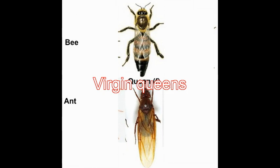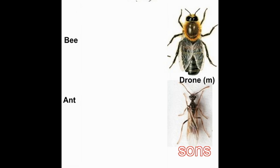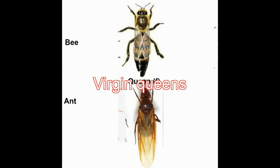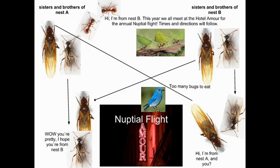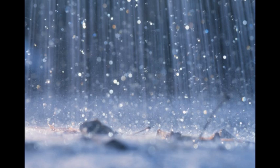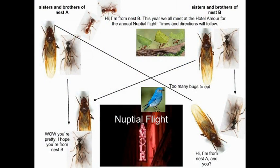Virgin queens get to make the nuptial flight to lose their virginity and become queens to form their own colony. Males are quickly converted into single-purpose sexual machines. Young virgin queens and males stay in their parent colony until conditions are right for the nuptial flight. The flight requires clear weather since rain is disruptive for flying. Different colonies of the same species often use environmental cues to synchronize the release of males and virgin queens so that they can mate with individuals from other nests, thus avoiding inbreeding.